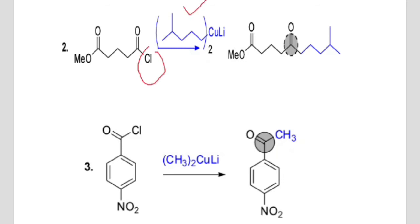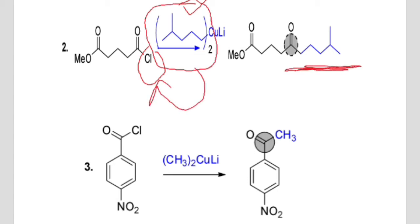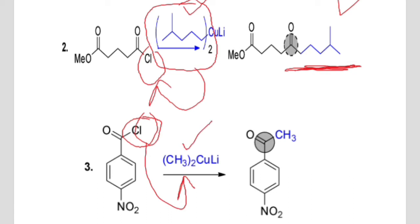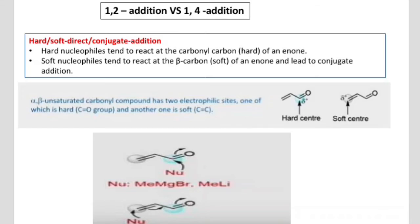Similarly, in the next case, the chloride group will be replaced with the Gilman reagent, and this part will replace the chlorine and attack at the carbonyl carbon side. In the same way, in this part, the chlorine group will be replaced with the Gilman reagent with the methyl group, and in the replacement of chlorine, the methyl group will be attached.